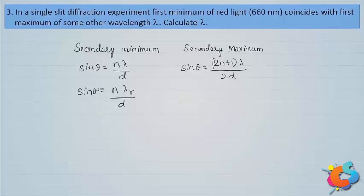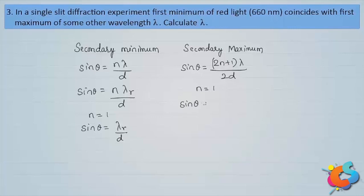Before equating, substitute the values of n. For the first minimum, n=1, so sin θ = λᵣ/d (Equation 1). For the first secondary maximum, n=1, so sin θ = 3λ/2d (Equation 2). Since the two fringes overlap, their angular positions are equal, so we can equate Equation 1 and Equation 2.